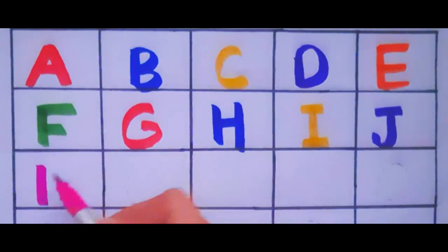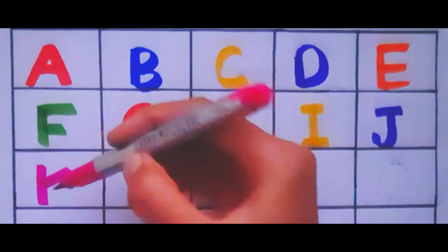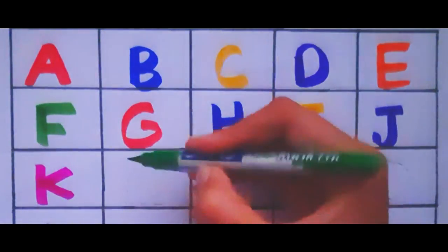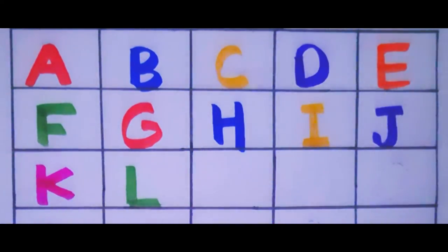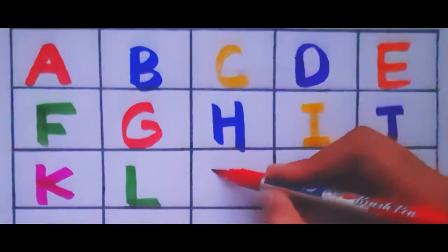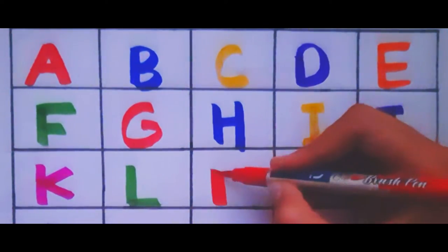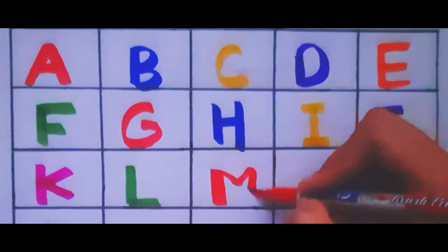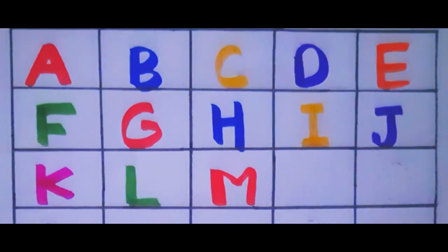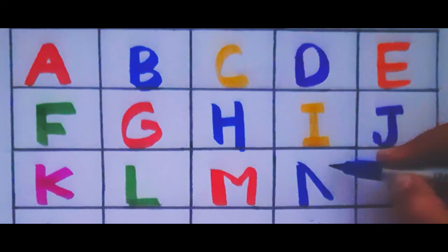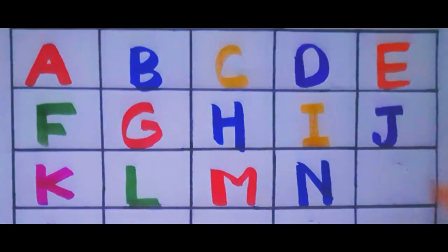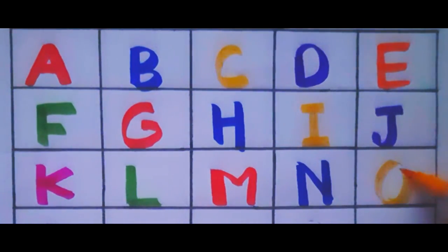K. K for kite. L. L for lion. M. M for monkey. N. N for nose. O. O for orange.